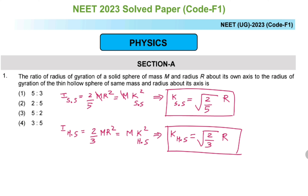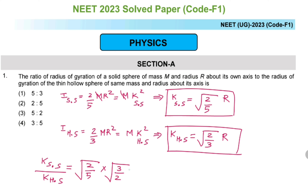Now they are asking for the ratio. k of solid sphere divided by k of hollow sphere equals √(2/5) divided by √(2/3). Taking the reciprocal and multiplying by √(3/2), the root 2 cancels out, giving us √(3/5).